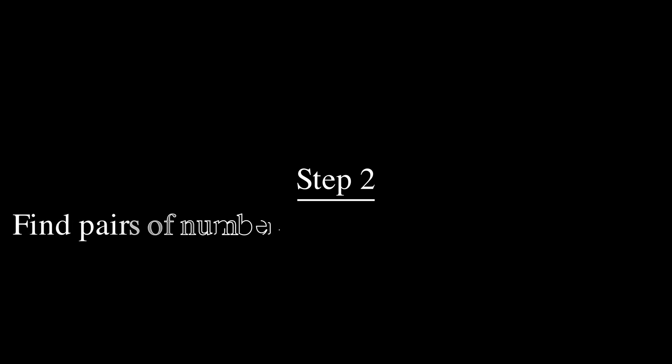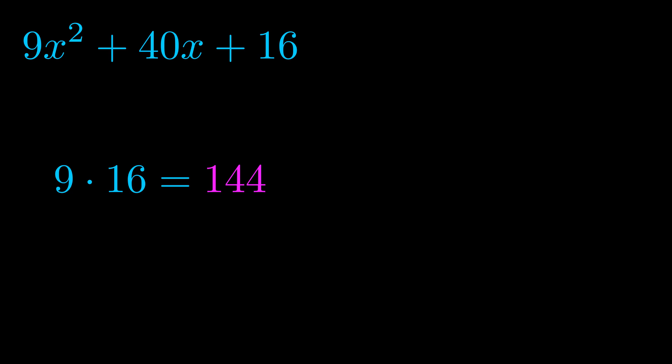Step two is to try to find all of the pairs which multiply to this number. Now it turns out you don't really need to find all of them but go ahead and write down as many numbers as you can that multiply to the magenta value for now. Pause the video and resume when you're ready to continue.